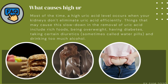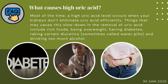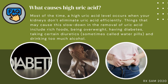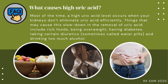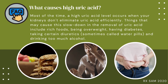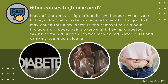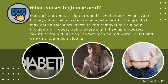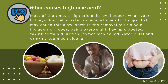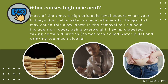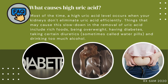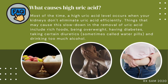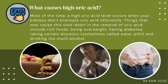What causes high uric acid? Most of the time, a high uric acid level occurs when your kidneys don't eliminate uric acid efficiently. Things that may cause this slowdown in the removal of uric acid include rich foods, being overweight, having diabetes, taking certain diuretics, sometimes called water pills, and drinking too much alcohol.